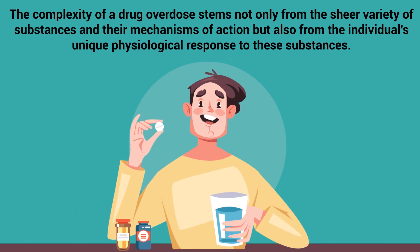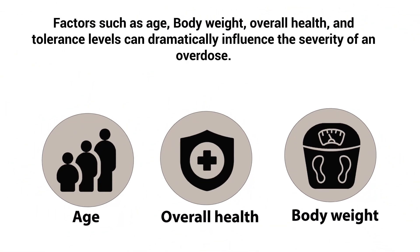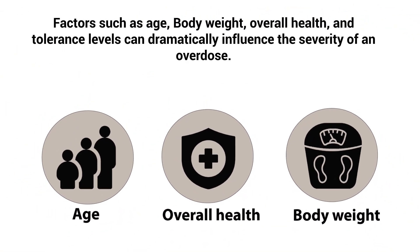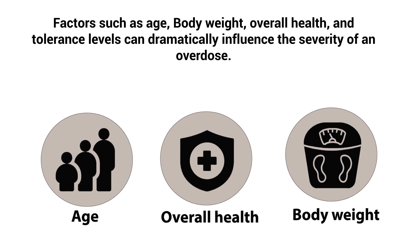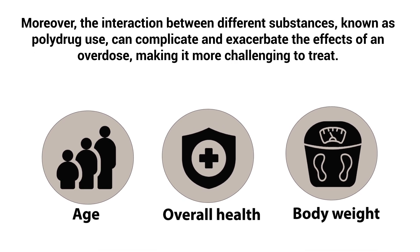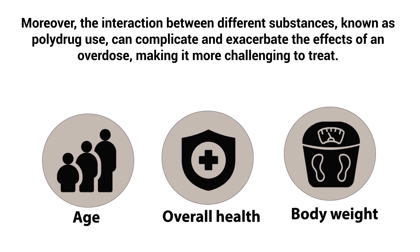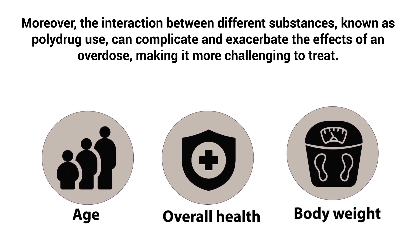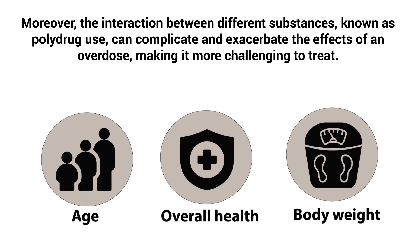The complexity of a drug overdose stems not only from the sheer variety of substances and their mechanisms of action, but also from the individual's unique physiological response to these substances. Factors such as age, body weight, overall health, and tolerance levels can dramatically influence the severity of an overdose. Moreover, the interaction between different substances, known as polydrug use, can complicate and exacerbate the effects of an overdose, making it more challenging to treat.